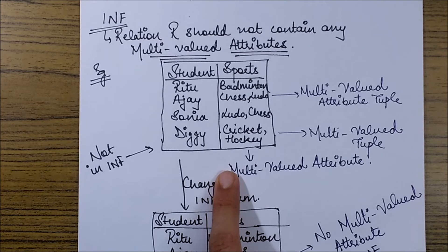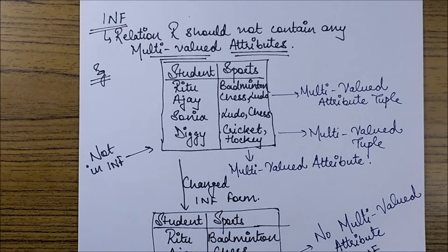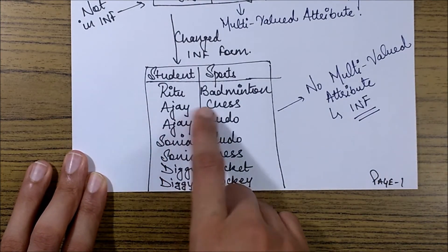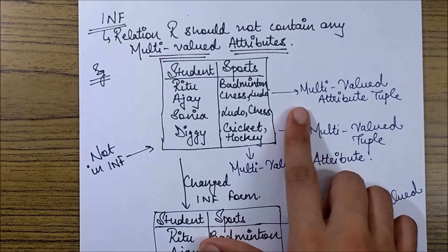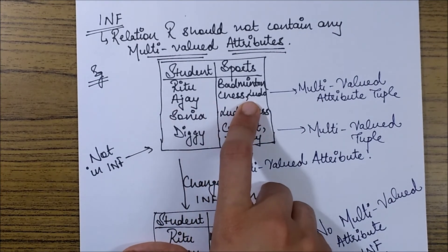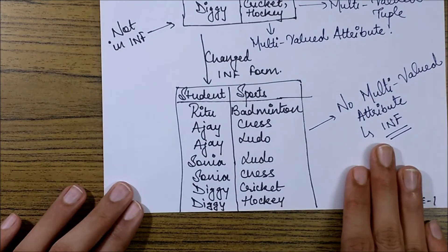So this table is not in one normal form, and in order to convert it into the first normal form, what we do is we simply write it like this. That is, if there are multiple values across various tuples, like for example Ajay had two sports being played as chess and Ludo, we would write them as separate rows like this.